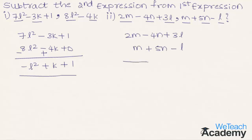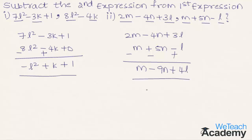Now let us subtract. The additive inverse of plus m is minus m, the additive inverse of plus 5n is minus 5n, and the additive inverse of minus l is plus l. Simplifying: 2m minus m is m, minus 4n minus 5n is minus 9n, and plus 3l plus l is plus 4l. So the result is m minus 9n plus 4l.